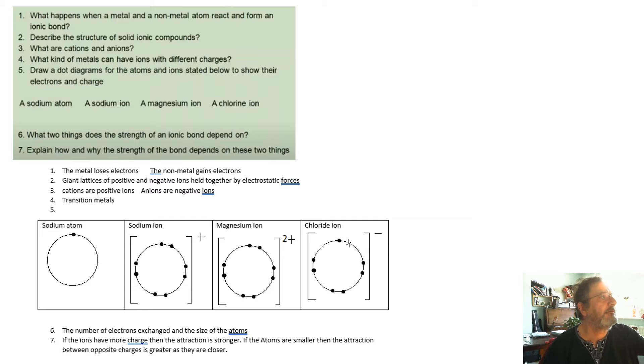What happens when a metal and a non-metal react and form an ionic bond? Well, the metal loses one or more electrons. The non-metal gains one or more electrons. A solid ionic compound is a giant lattice of positive and negative ions attracting each other, keeping it together when it's a solid. Cations are positive ions. Anions are negative ions.